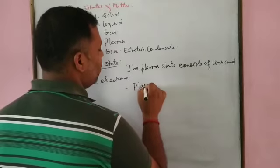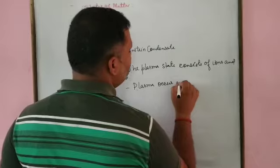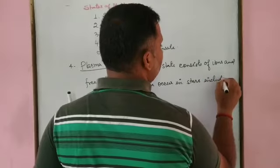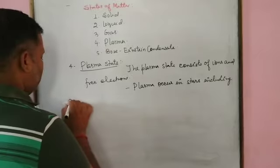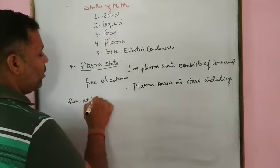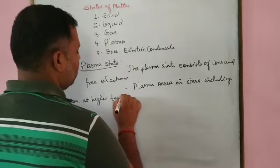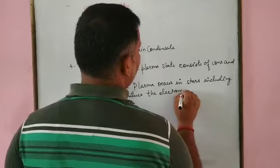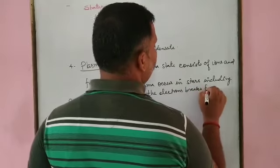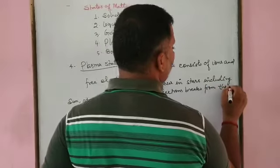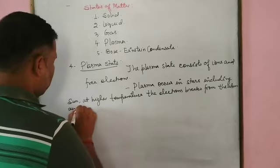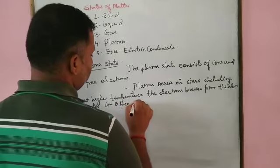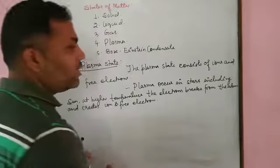Plasma occurs in stars, including the sun. At higher temperatures, the electrons break away from the atom and create ions and free electrons. This is known as plasma state.